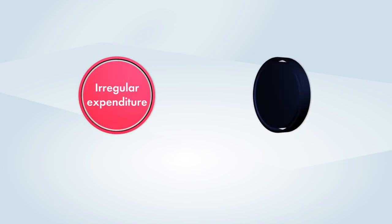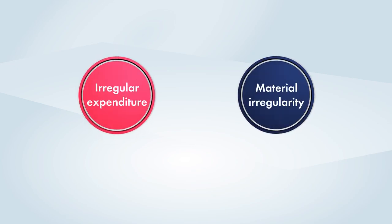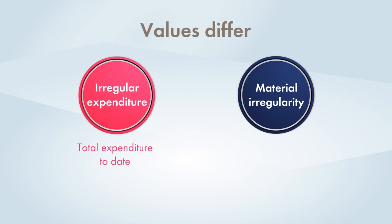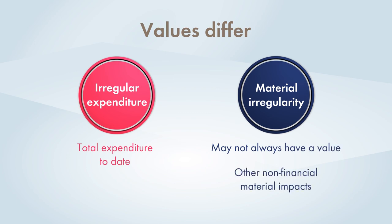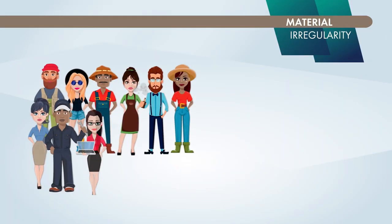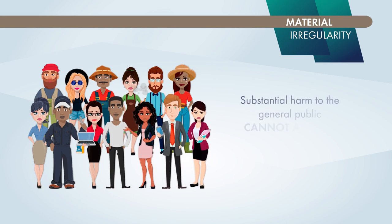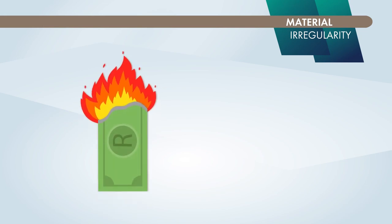Here's another way of looking at irregular expenditure and material irregularity — they differ in terms of value. Irregular expenditure is the total expenditure to date. Material irregularity, on the other hand, may not always have a value, as there are other non-financial material impacts. For instance, substantial harm to the general public cannot always be quantified, but if the material irregularity relates to financial loss, then this has an actual or likely value.